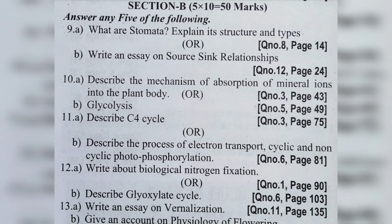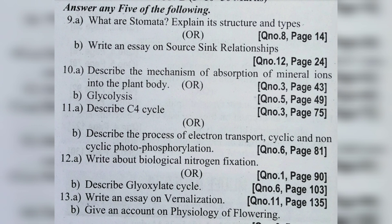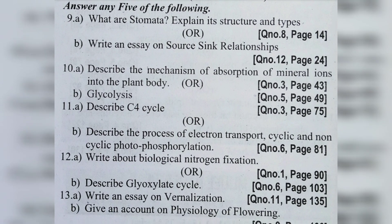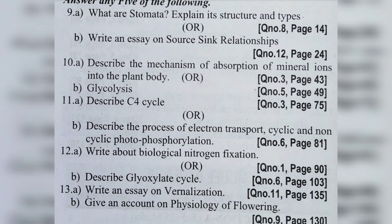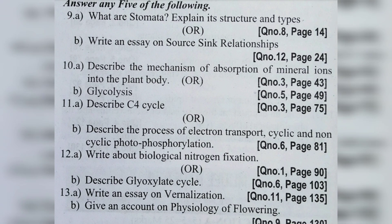Model Paper 3 long answers: Question 10a: describe the mechanism of absorption of mineral ions into the plant body. Question 10b: glycolysis. Question 11a: describe C4 cycle. Question 11b: describe the process of electron transport chain and non-cyclic photophosphorylation. Question 12a: write about biological nitrogen fixation. Question 12b: describe glyoxylate cycle. Question 13a: write an essay on vernalization. Question 13b: give an account on physiology of flowering.